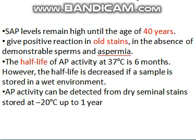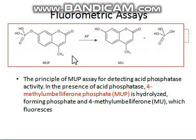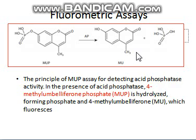The next analysis is the fluorometric assay. This analysis also relies on the presence of acid phosphatase, but instead of a color change through a dye coupling reaction, fluorescence is observed. The reagent used is methylumbelliferyl phosphate, which is hydrolyzed by acid phosphatase into a phosphate ion and 4-methylumbelliferone. This compound has the property to fluoresce, and the resulting fluorescence indicates the presence or absence of semen.